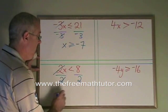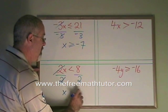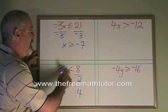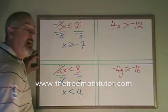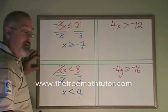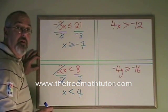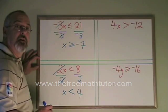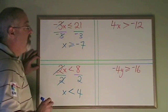These cancel. My x is isolated. 8 divided by 2 is 4, and my less than symbol is copied down. I do not turn it backwards because I divided both sides by a positive number. It's only if I'm dividing both sides by a negative number that I would turn it backwards.